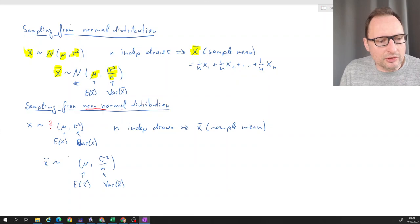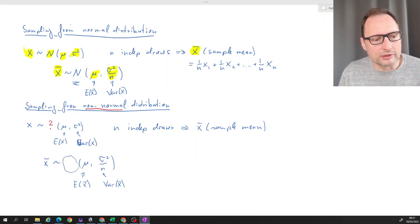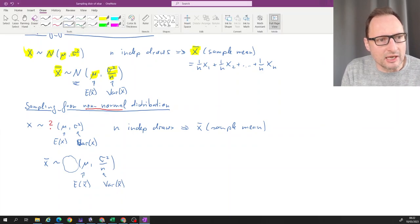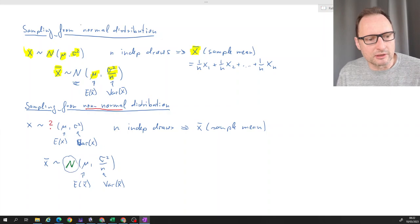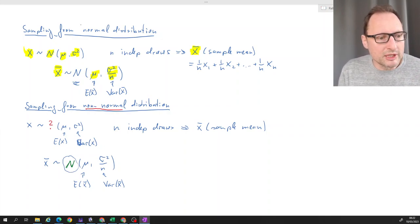So how do we know now what this distribution is? And this information is given to you by the central limit theorem and it tells you that the distribution of x̄ is actually a normal distribution regardless of this distribution. So that could be any crazy distribution.